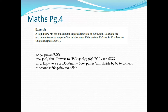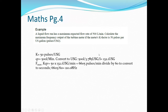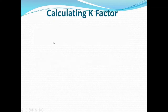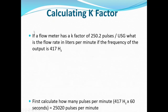Since frequency is counted in seconds, we convert: 50 pulses/gallon times 132.1 gallons/minute equals 6,605 pulses per minute. Dividing by 60 gives 110.08 hertz — that is, 110.08 pulses per second representing 500 liters per minute. The key conversions to be conscious of are gallons-to-liters and seconds-to-minutes.